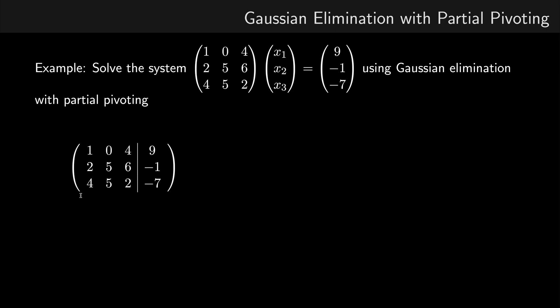Now, previously, the row operations we did was row 2 minus 2 row 1, and row 3 minus 4 row 1. But here we want to use partial pivoting.